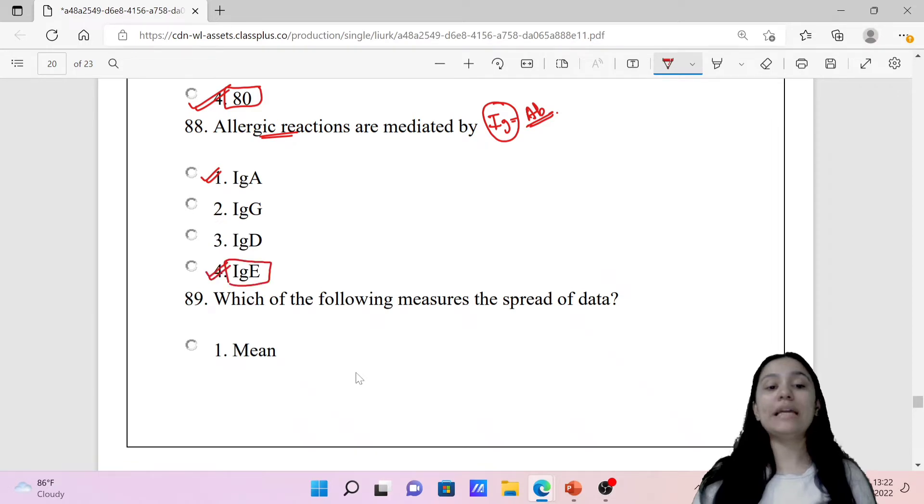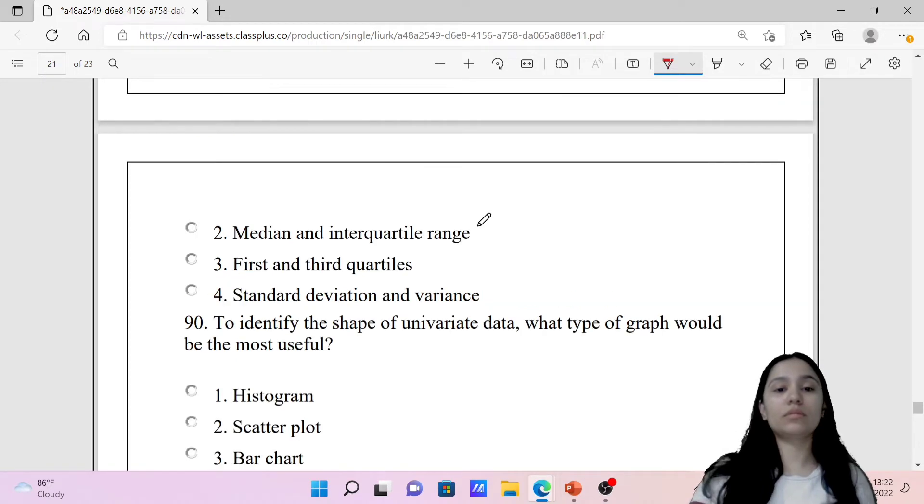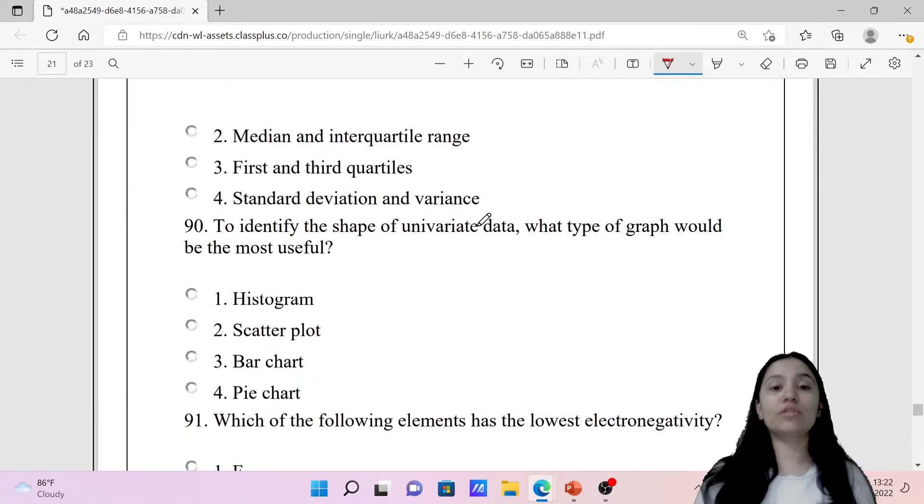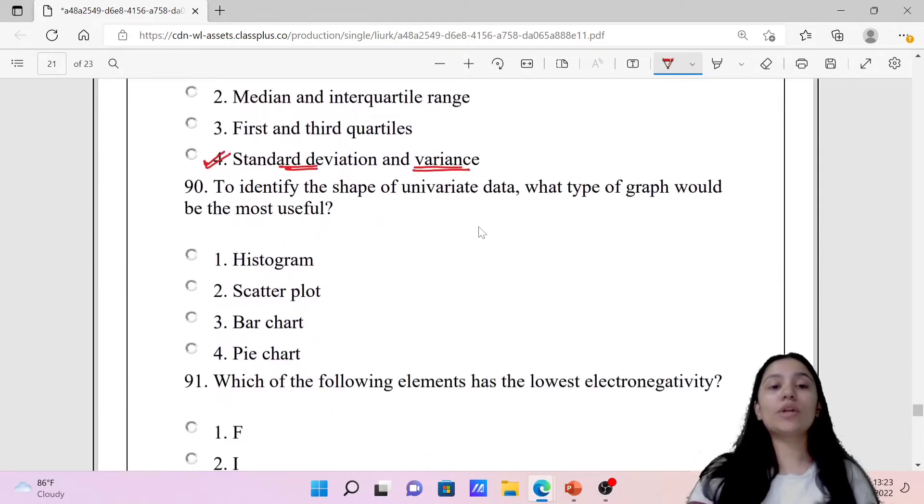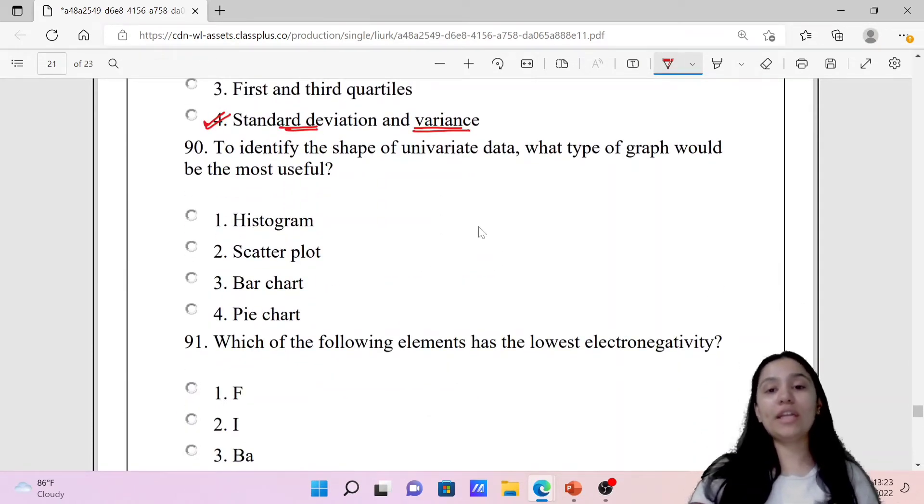Next question: Which one of the following measures spread of data? We have median, interquartile range, first and third quartiles, and standard deviation and variance. The correct option is fourth, standard deviation and variance. To identify the shape of univariate data, what type of graph would be most useful? For univariate data, we use histogram. Option A is the correct option. This data processing is part of research, so keep this in mind.